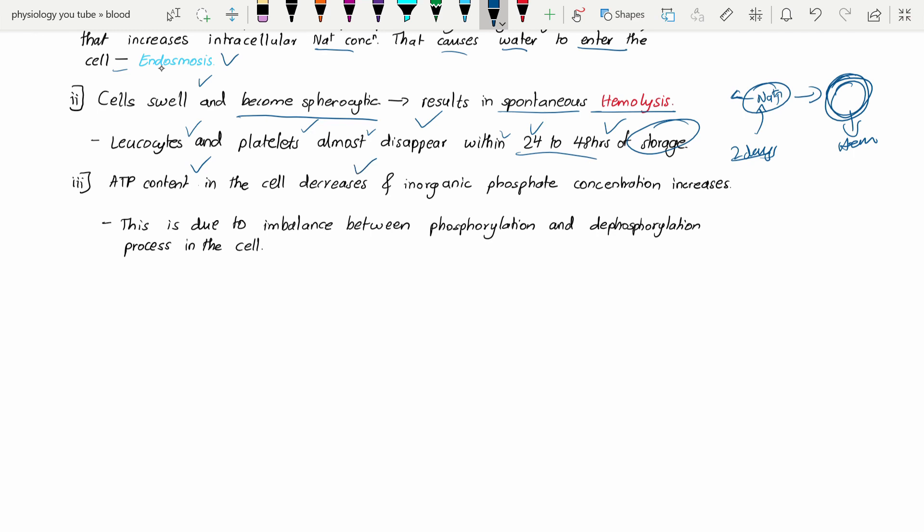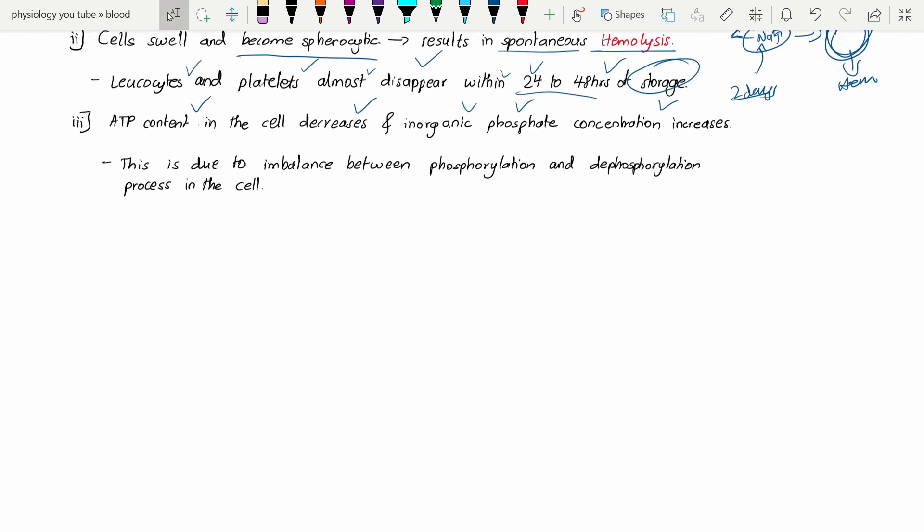The inorganic phosphate concentration increases because if the cell needs ATP for energy, it is going to be consumed and there occurs a decrease in ATP content. Inorganic phosphate concentration increases. ATP is converted to ADP plus inorganic phosphate, which accumulates.